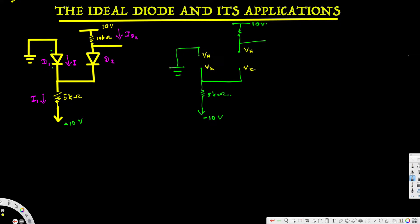If we get a Va value that is greater than Vk, it means this diode is on — it is in forward bias — so we have to replace that diode with a short circuit. For this diode, Va1 is equal to zero volts because it is connected to ground. Vk1, since there is no current flow, is exactly the same as the source: negative 10 volts. Va2 is going to be 10 volts and Vk2 is going to be negative 10 volts.